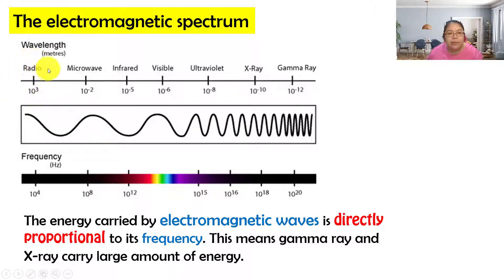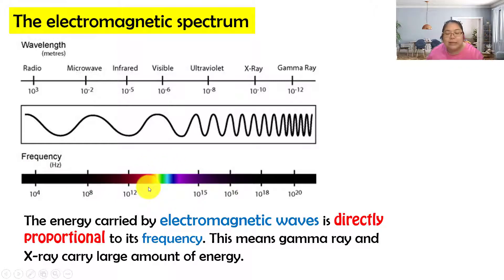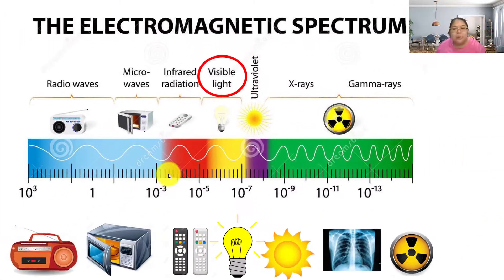Starting from here, the first one is the radio wave, with the longest wavelength, meaning the frequency is small. The last one is gamma ray, with very high frequency, so lambda becomes very small. The energy carried by the electromagnetic wave is directly proportional to the frequency. So gamma ray and x-ray carry a large amount of energy. In the center of the spectrum bar, you can see the visible light — that is the only part of the whole spectrum that we can see.